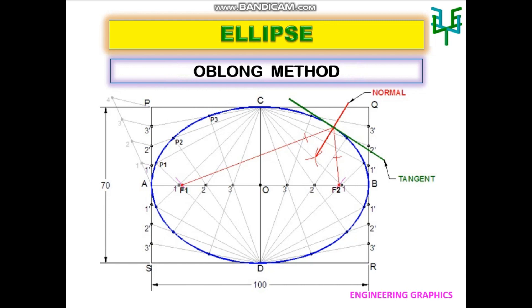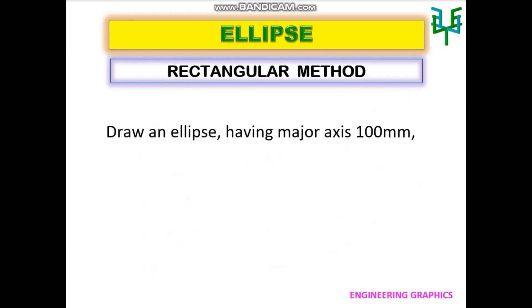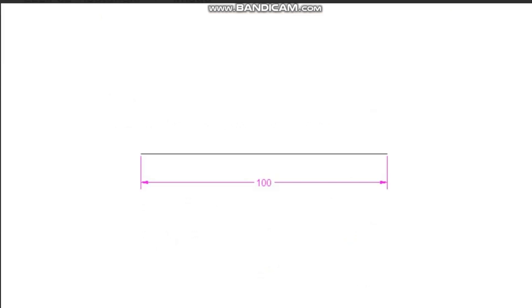Draw an ellipse having major axis 100 mm and minor axis 70 mm by rectangular method. Draw a line of length 100 mm. Let this line be the major axis of the ellipse with endpoints A and B.